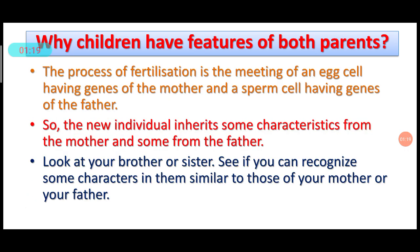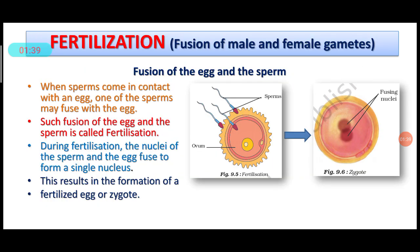There is a question: why do children have features of both parents? You will see, when you look at your sisters and brothers, that there are certain features from your mother and certain features from your father. So what is the cause of this?